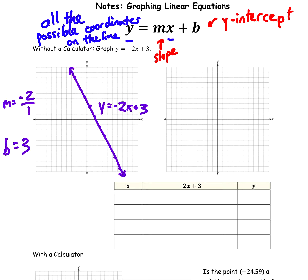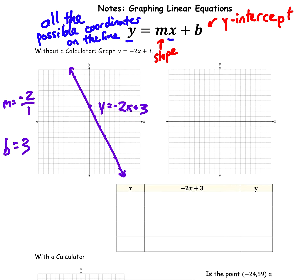I've seen that sometimes students graph like that and forget about the negative slope, making it positive. So whenever you graph that way, just check your line at the end: is my y-intercept at positive 3? Yes. Is my slope negative — am I going down? Yes, the line is going down. So that is correct.